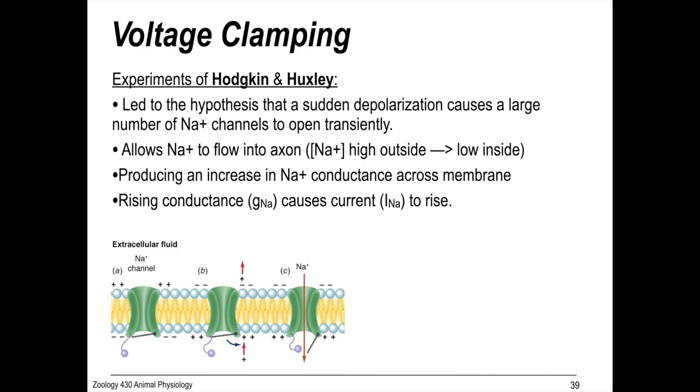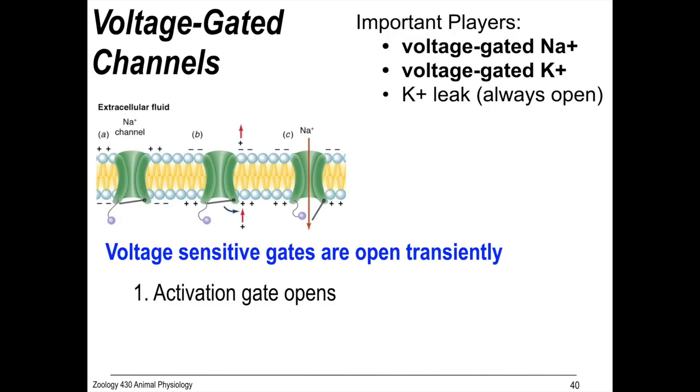So, this is the GNa. The rising conductance, or GNa, causes the current INa to rise.